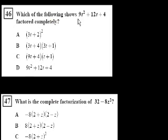Problem 46: Which of the following shows 9t² + 12t + 4 factored completely? This is interesting because immediately when I look at the numbers, there's not one number I can factor out of everything. It's not like 9, 12, and 4 have common factors. So I can't do that simplification. We're going to have to do a little more complexity.